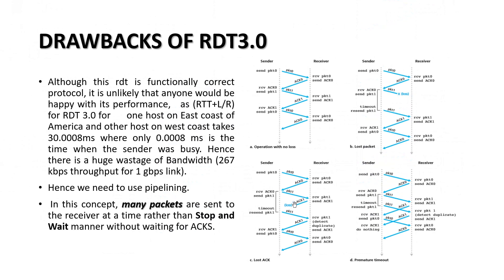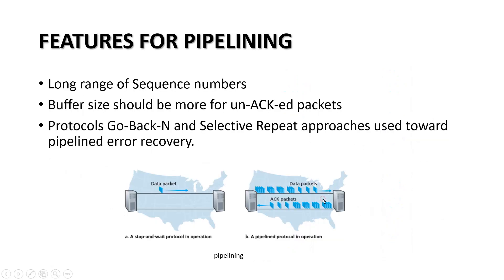To overcome these issues, we use a concept called pipelining, where multiple packets are sent at one time. A long range of sequence numbers is needed, and buffer size must be maintained for unacknowledged packets. Protocols like Go-Back-N and Selective Repeat are used as two approaches to control the number of packets and retransmission techniques.